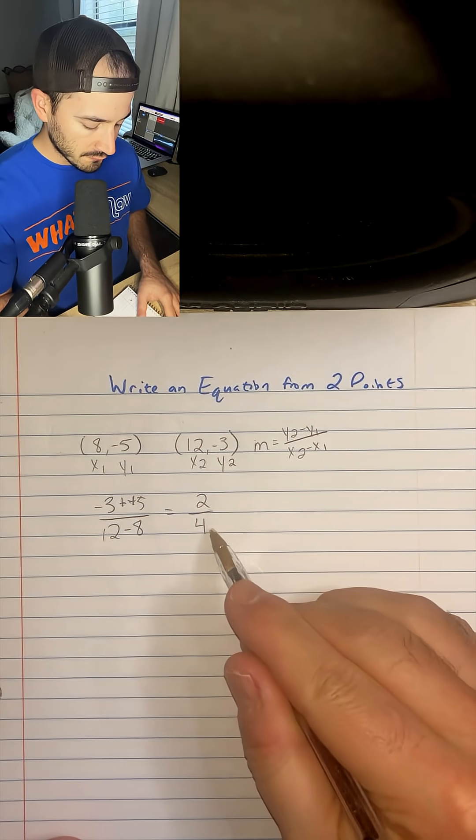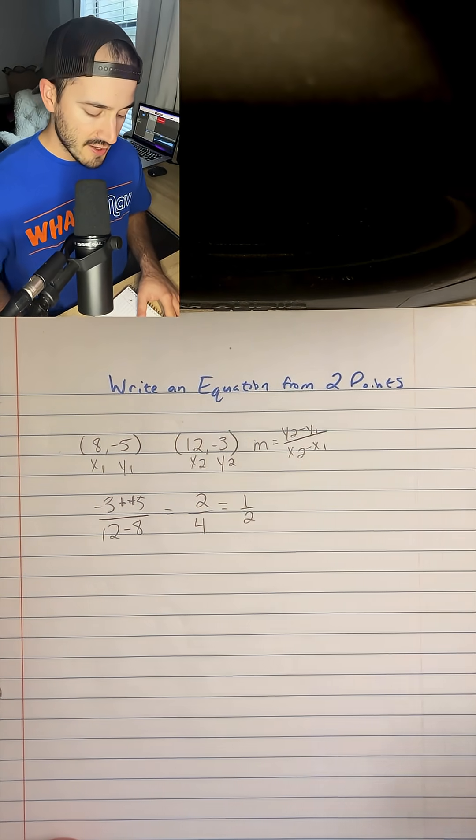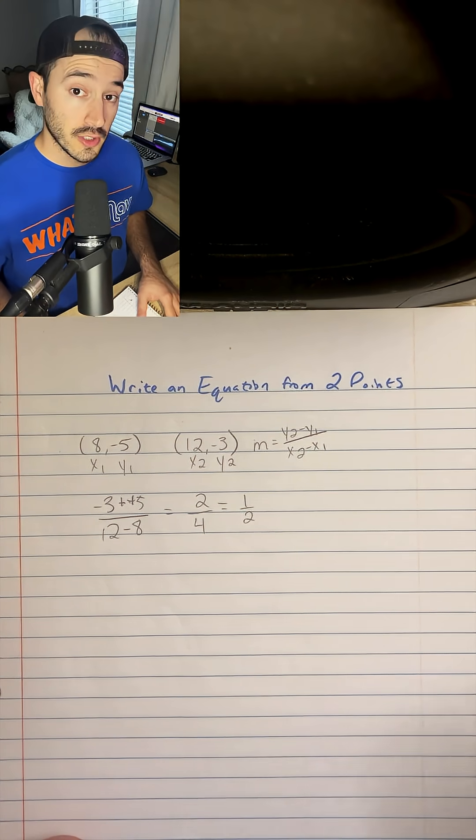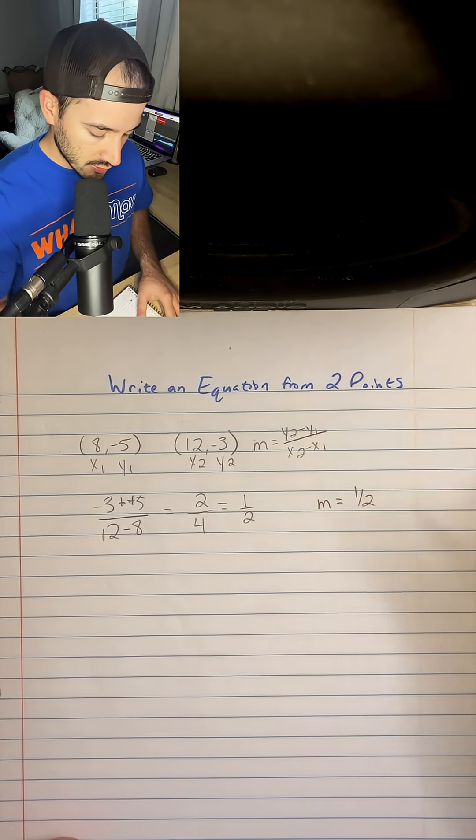So we have 2 over 4, which can reduce to 1 over 2 or 1 half. So our slope is 1 over 2. So I'm going to make a note that m is equal to 1 half.